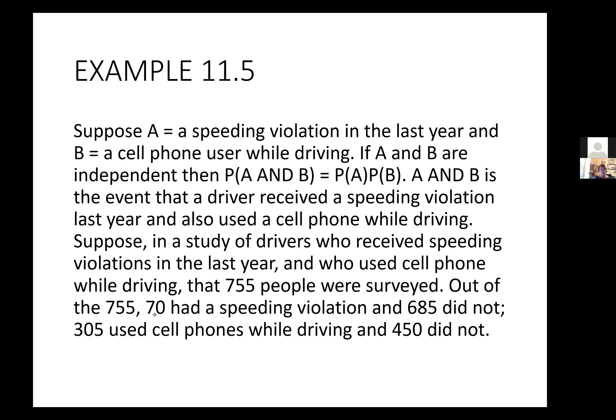We're going to look at how to calculate the expected value. Suppose A is a speeding violation in the last year, so event A is that you get a speeding ticket. Event B is that you're using a cell phone while driving. If A and B are independent, then P(A and B) — that you get a speeding ticket and were using a cell phone — is the probability of getting a speeding ticket times the probability of using a cell phone.